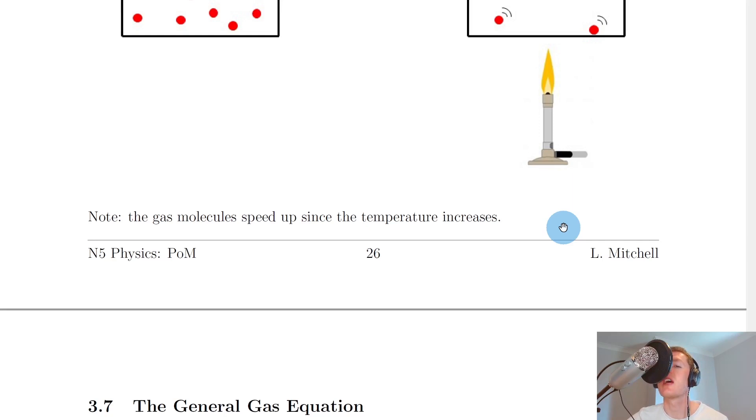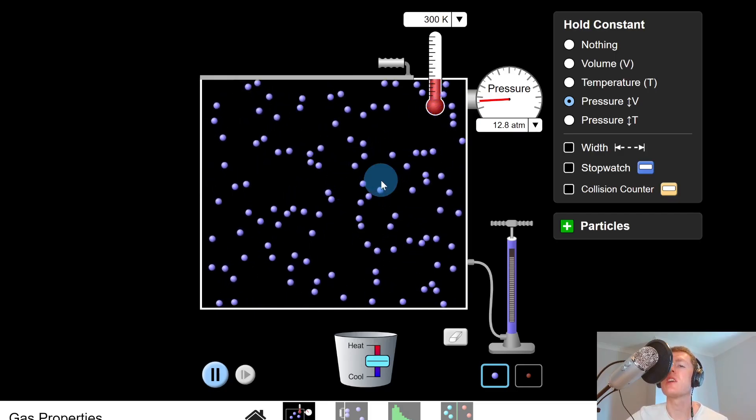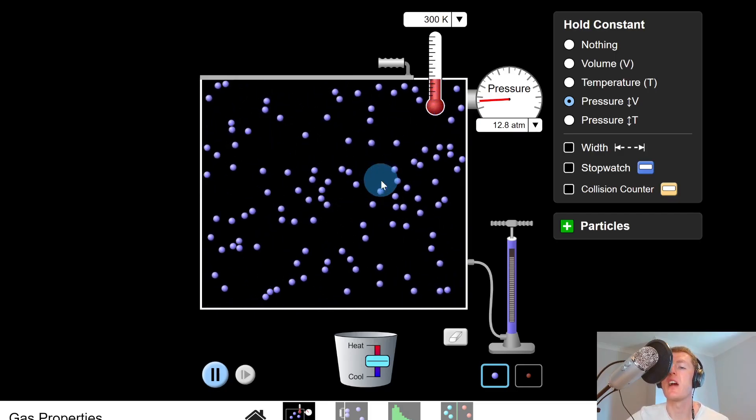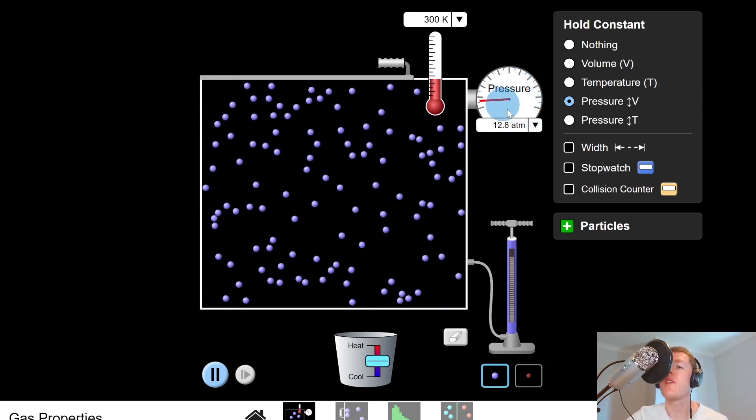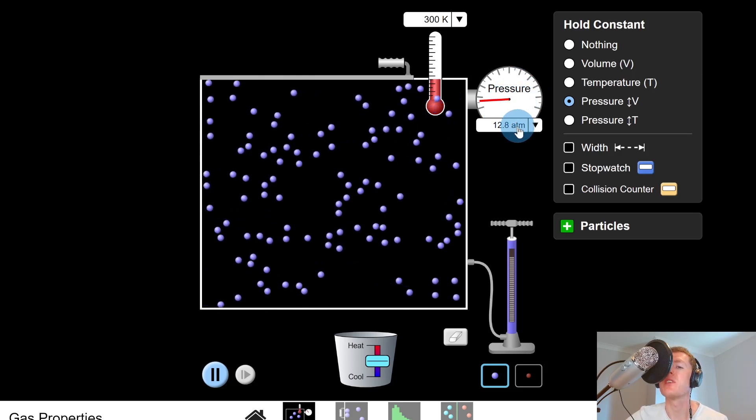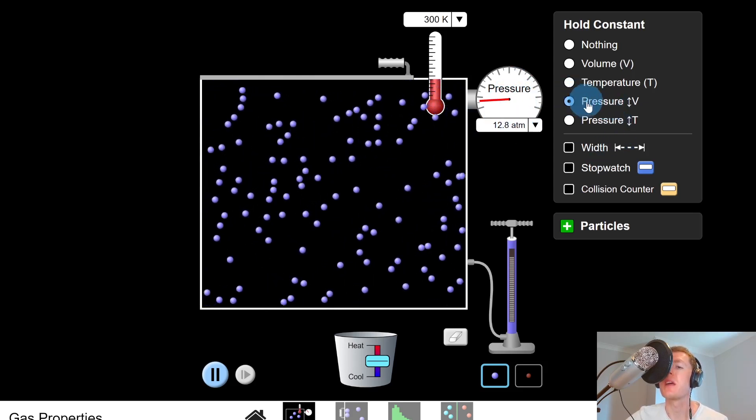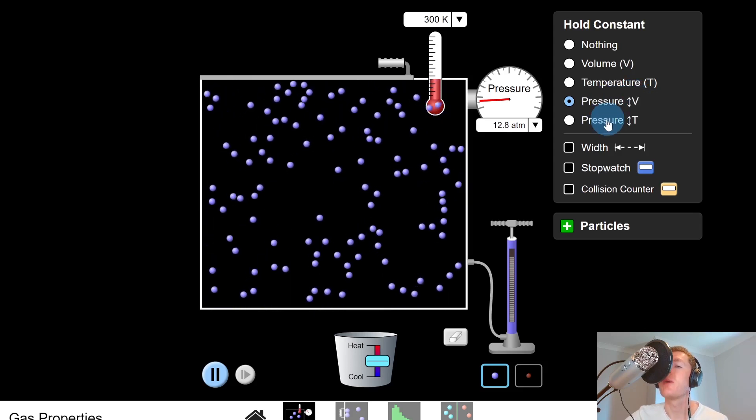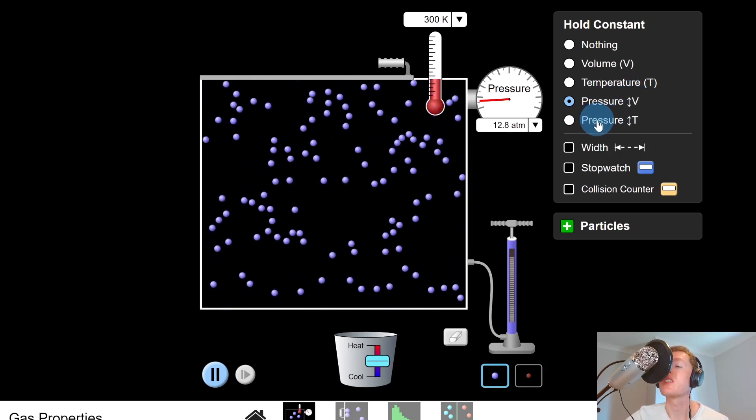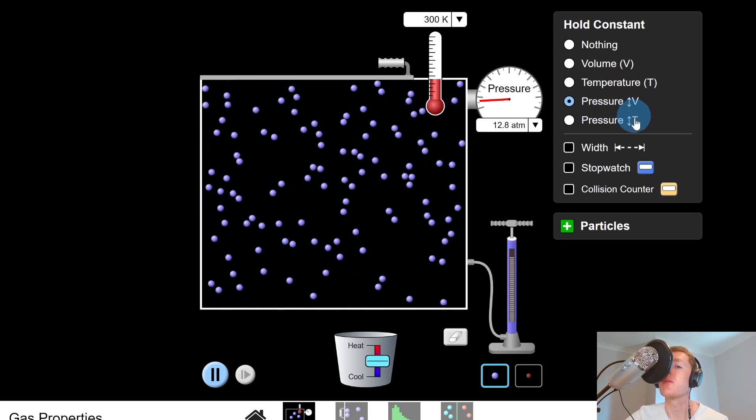Now I'm just going to show you a quick simulation to help you visualize this. So you can see here that I've got my particles in the container, and they're all moving about randomly in all directions. You can see I've also got a fixed pressure of 12.8 atmospheres, and that's because I'm keeping pressure constant here, and I've chosen the option to allow volume of the container to change, but we could also select this one here, which is keeping pressure constant, allowing temperature to change.